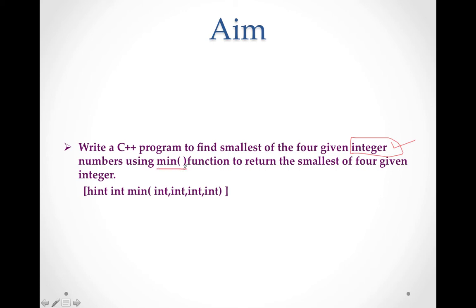If you change the name of the function you will lose all your marks. You have to do the program using the mean function only. The next important thing is the return keyword — mean function has to return the smallest of four given integers, so the return type of the mean function should be integer.